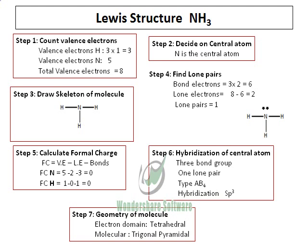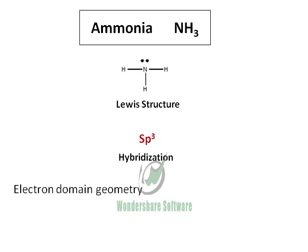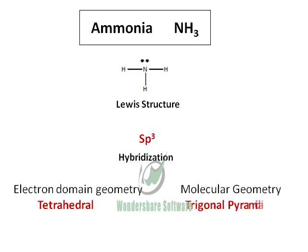Let's sum up what we have for ammonia. Ammonia has the Lewis structure as shown, with an SP3 hybridized central atom, an electron domain geometry of tetrahedral, and a molecular geometry of trigonal pyramidal. Because of the presence of a lone pair, the bond angle is smaller than the tetrahedral bond angle — just like water — but slightly larger than that of water, so it falls between the bond angle of water and the general tetrahedral bond angle.